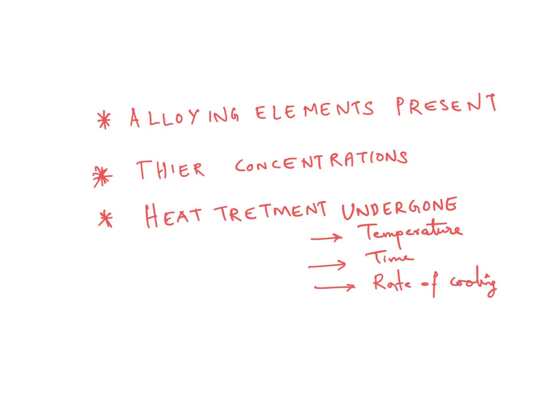Then the heat treatment it is undergoing. So heat treatment process is basically you take a metal, you heat it up to a temperature, you keep it at that particular temperature for a while and then you cool it. This is basically how a heat treatment process works.